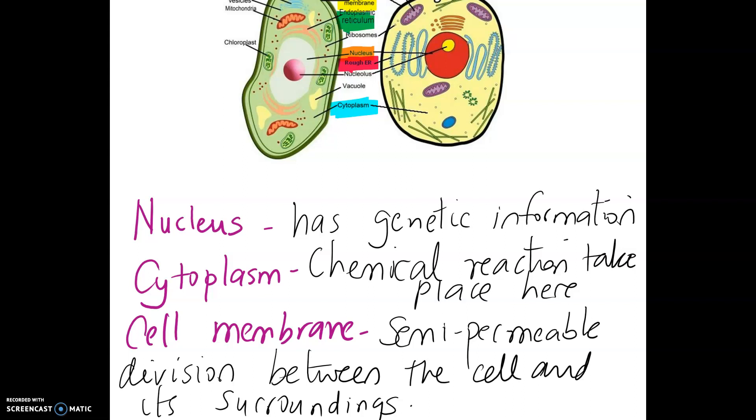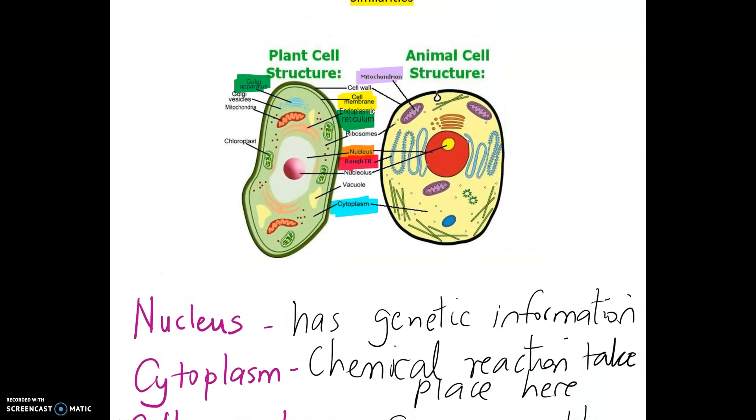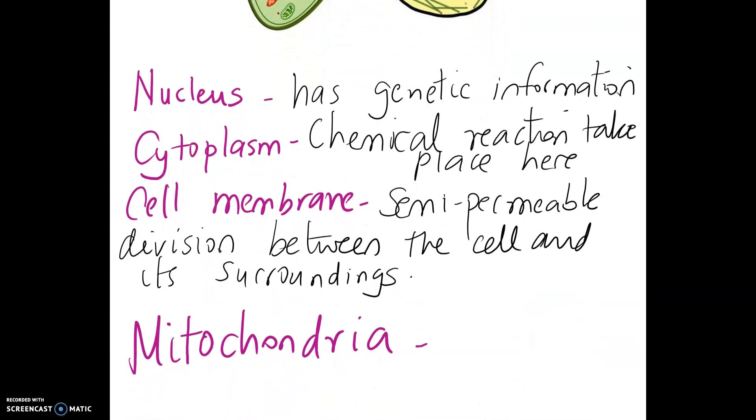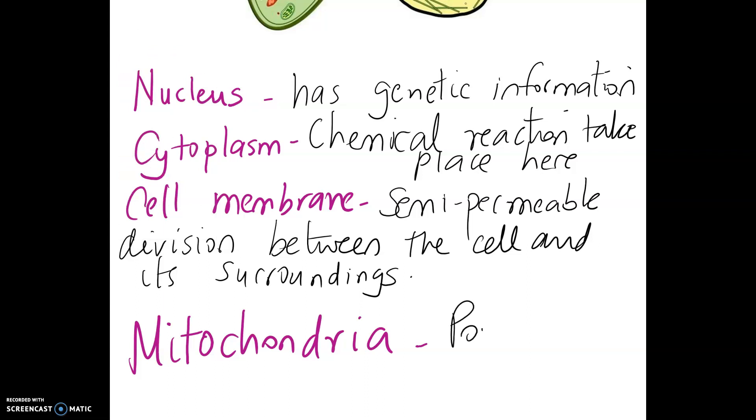Because it only allows certain stuff through, it allows to control the biochemistry of the cell. The next structure I am going to look at which is highlighted here in purple is the mitochondria. Now mitochondria is like the powerhouse of the cell. So mitochondria is where you will find the energy for essential processes such as aerobic respiration.